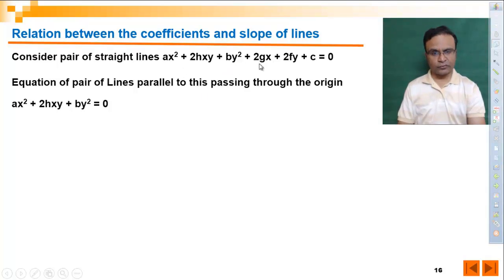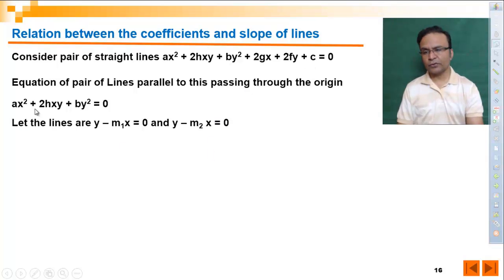This pair of straight lines and this pair of straight lines - this is passing through origin and this is passing through some point other than origin. Now suppose this pair of straight lines has component lines y minus m1x equals 0 and y minus m2x equals 0, lines of slope m1 and m2.